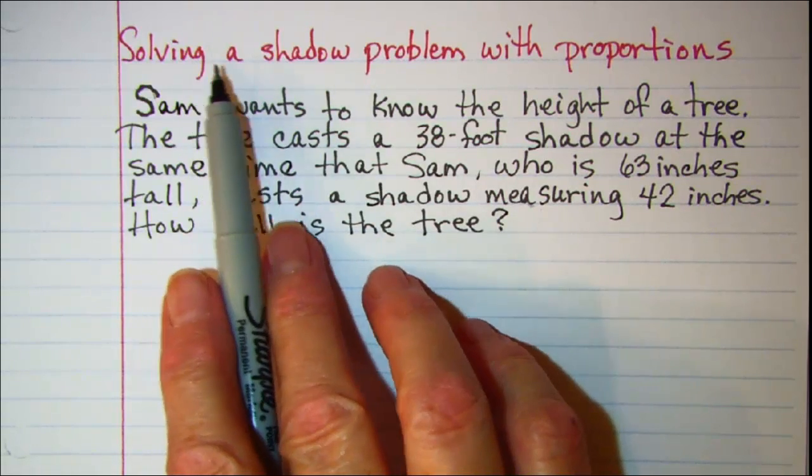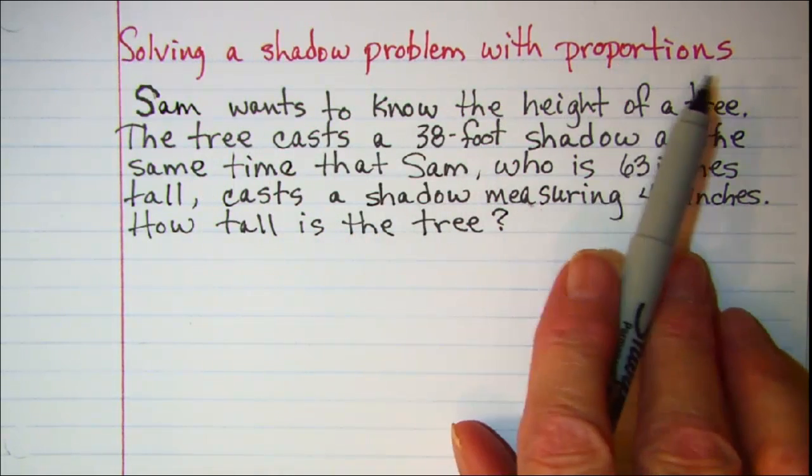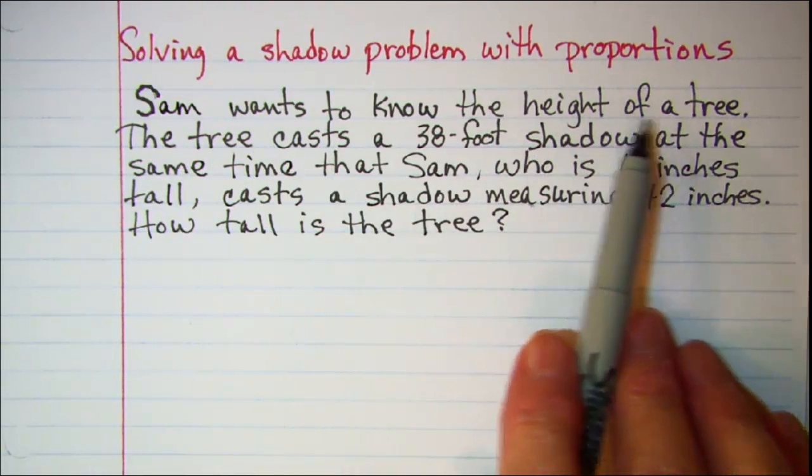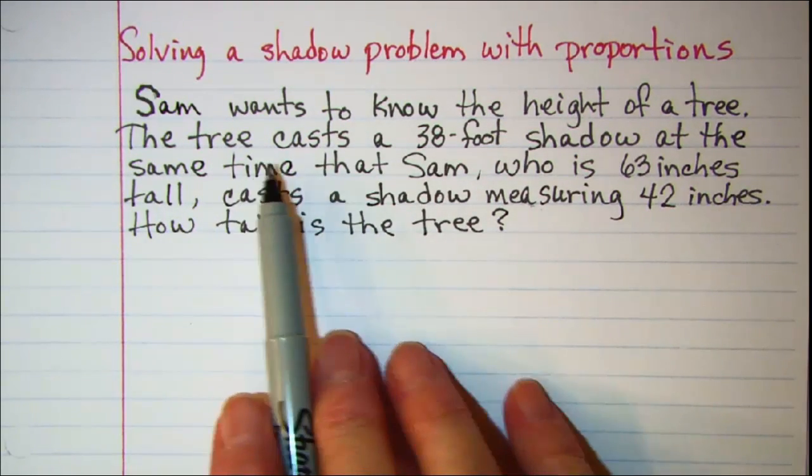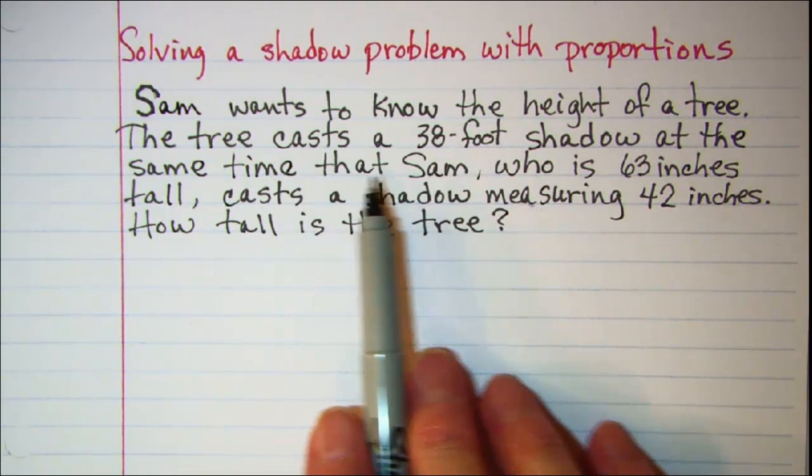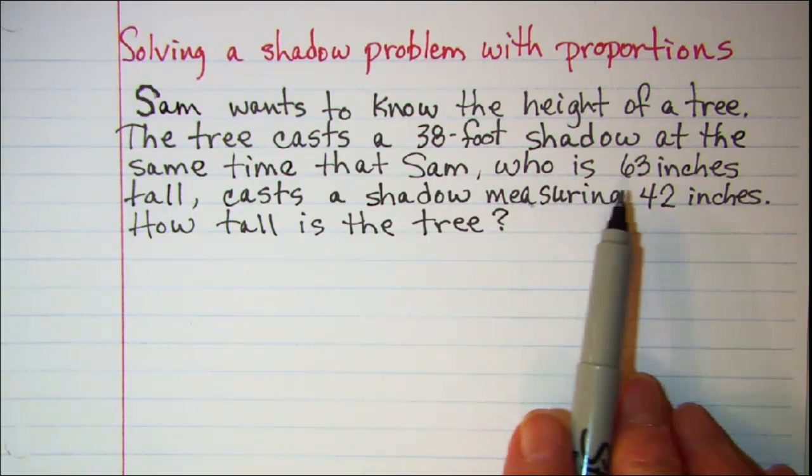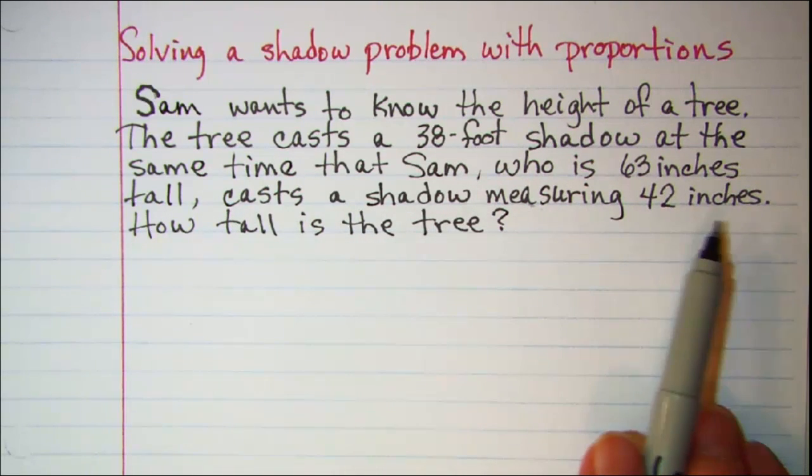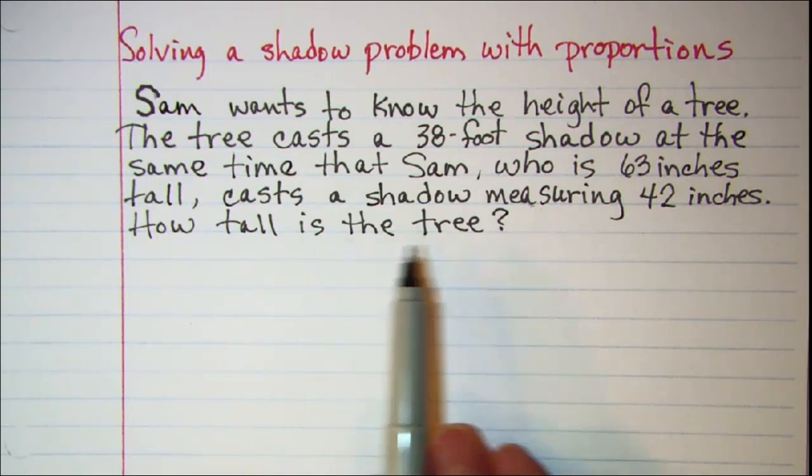In this video we'll be solving a shadow problem with proportions. Our problem is Sam wants to know the height of a tree. The tree casts a 38 foot shadow at the same time that Sam, who is 63 inches tall, casts a shadow measuring 42 inches. How tall is the tree?